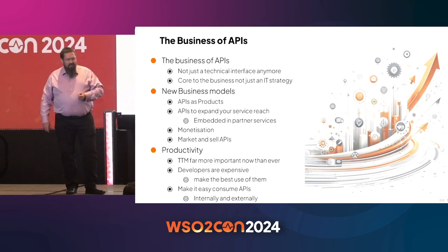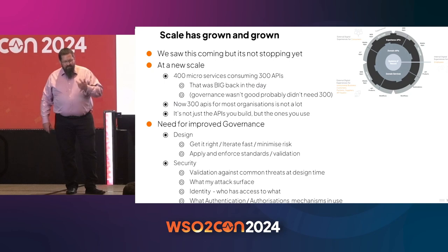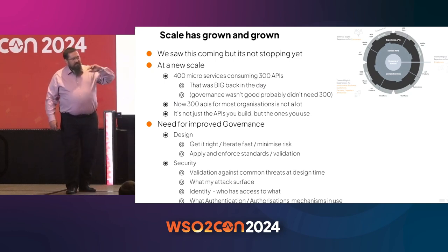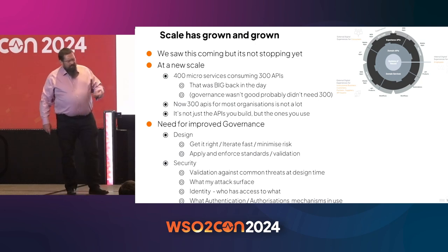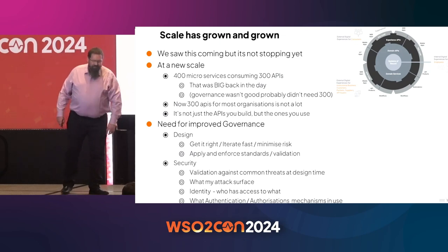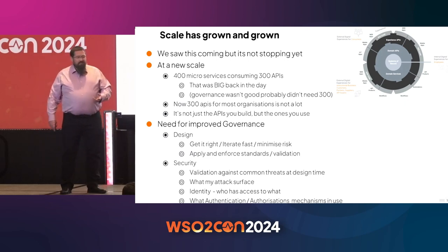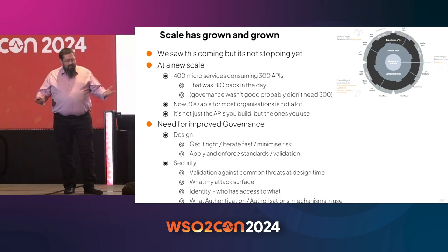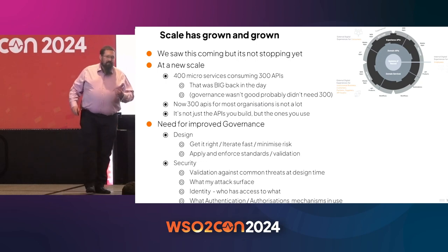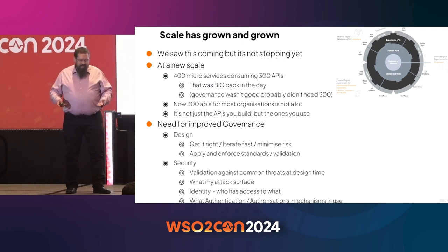The other element I've seen more and more over the last few years is the scale just getting bigger. Back when I was doing it, we had about 300 APIs, and that was pretty big. But it's not just the APIs you're creating — it's also the APIs you're consuming from SaaS services, from AI, LLMs, et cetera. And all of that is a new scale to manage. We're not talking about 300 or 400 APIs anymore. A lot of our customers now have 1,000, 2,000, and some are even talking about 50,000 plus APIs. So the need for governance at that scale and making sure you've got the right security is becoming more and more critical.